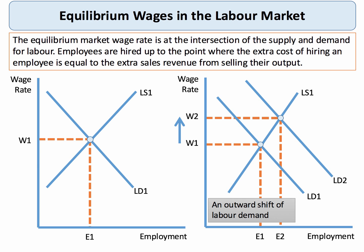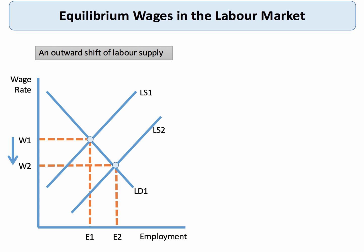Let's have a look at some more changes. In this example, we see an influx of people into a particular occupation — in other words, an outward shift of the labour supply curve from LS1 to LS2. Assuming a given level of labour demand, the equilibrium wage will fall from W1 to W2, even though more people will be in employment in this industry.